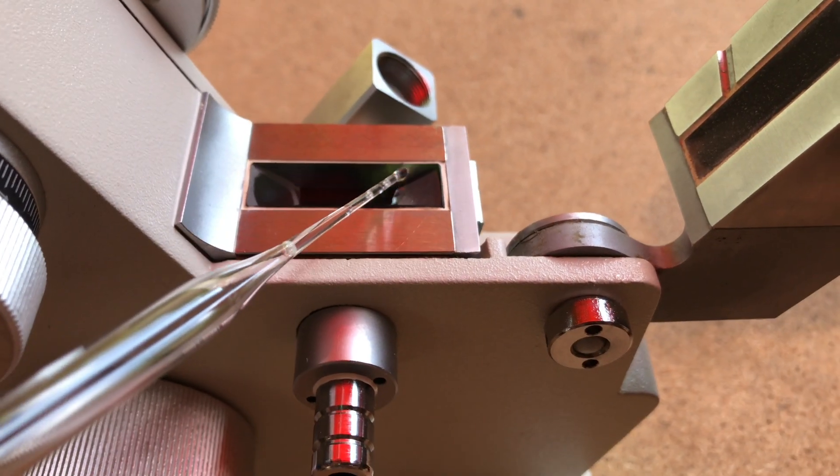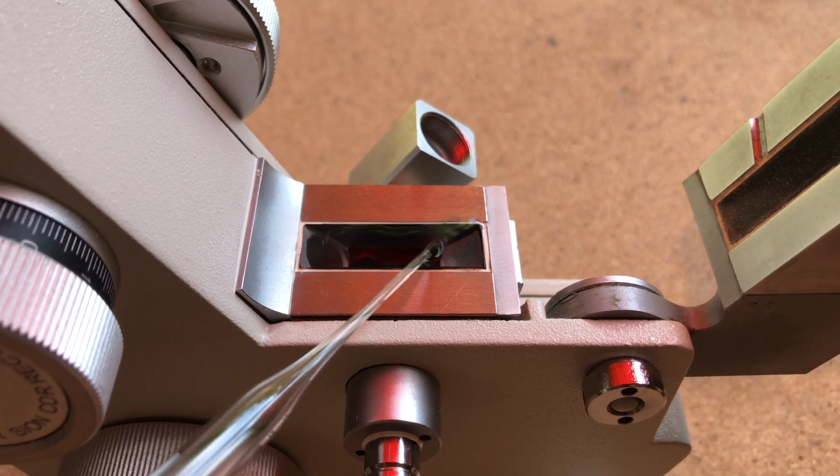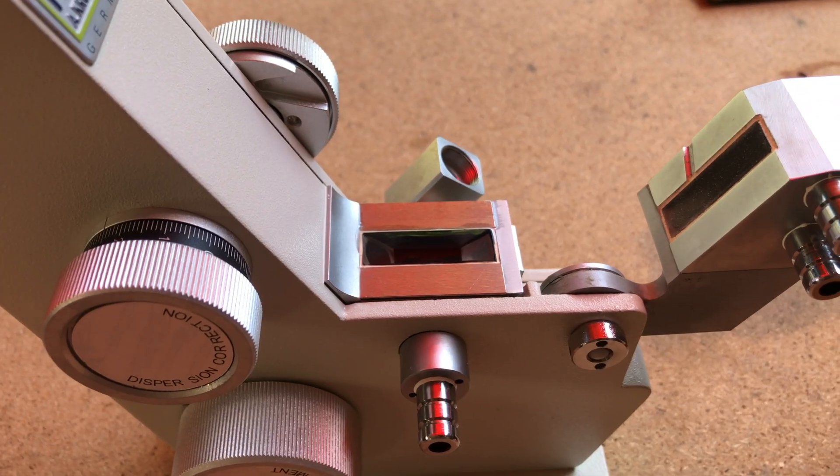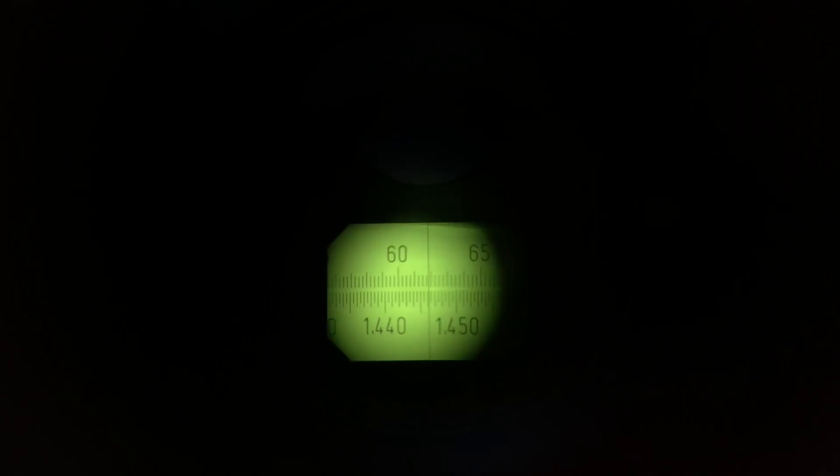One possible route to determine if what we made is actually what we wanted is to use a refractometer. To use it you put some of your sample onto this glass plate and close it up. In the beginning this line up here is blurry and off-center. Using the wheels on this apparatus you adjust it to make it non-blurry and in the center.